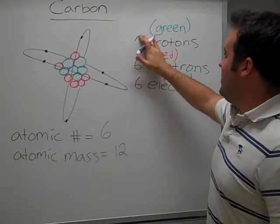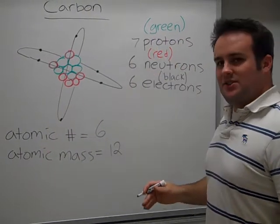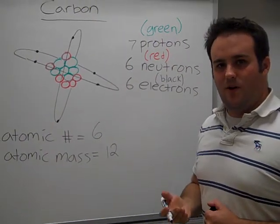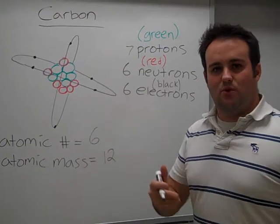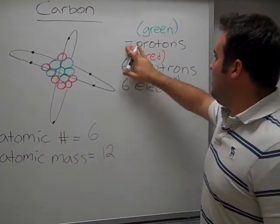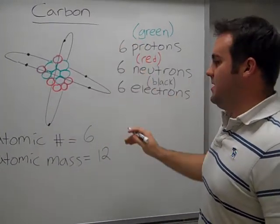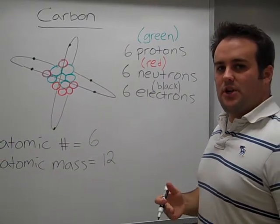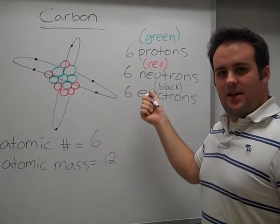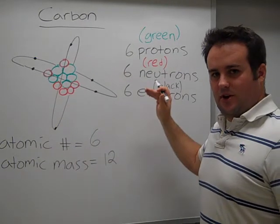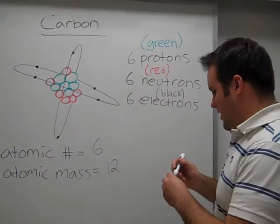Well, if we change the number of protons, obviously this would not be carbon anymore, because its atomic number would equal that of nitrogen. So our focus is going to be on what happens when we change the number of neutrons in the nucleus and the number of electrons. Let's start with the number of neutrons first.